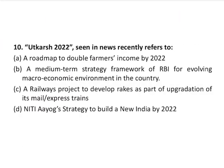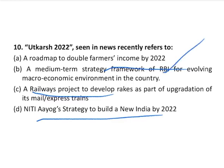The last question is about UTKARSH 2022, seen in the news. The options are: a roadmap to double farmer income, a medium-term strategy framework for RBI, a rail project, or a NITI Aayog strategy to build a new India by 2022. The correct answer is option B — it is the medium-term strategy of RBI for evolving the macroeconomic environment in the country. That's all for today. I hope you liked the class. Please like and subscribe to our channel for more such videos. Thank you.